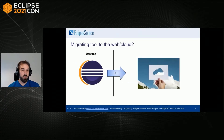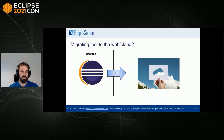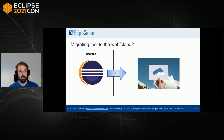So what is this talk about? I assume you have some desktop tool based on the Eclipse platform — it can be a full tool distribution or a plugin — and you now want to migrate that to the web or to the cloud. Typically that would be VS Code or Theia, but could also be something else. I don't really make a difference in this particular talk about what the target platform is, so the information is more generic.